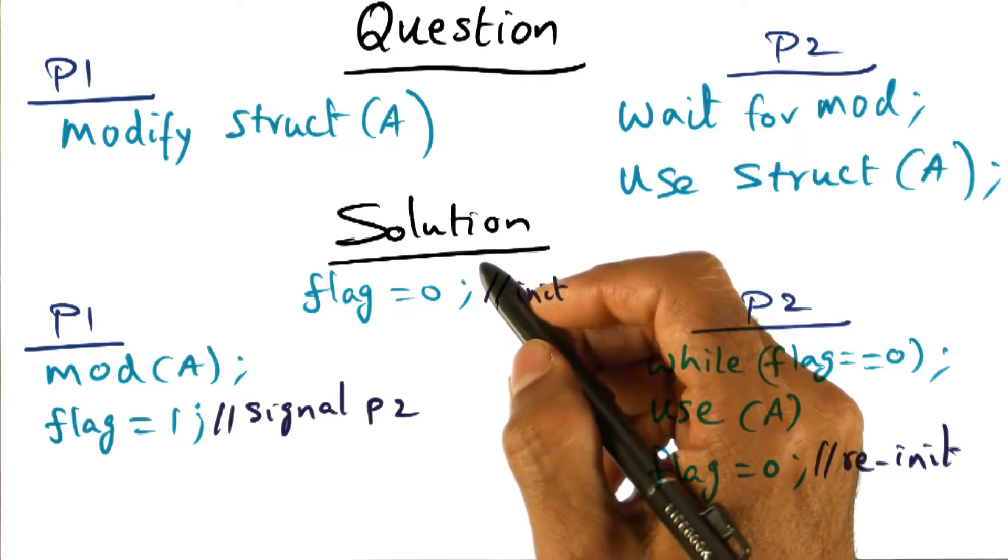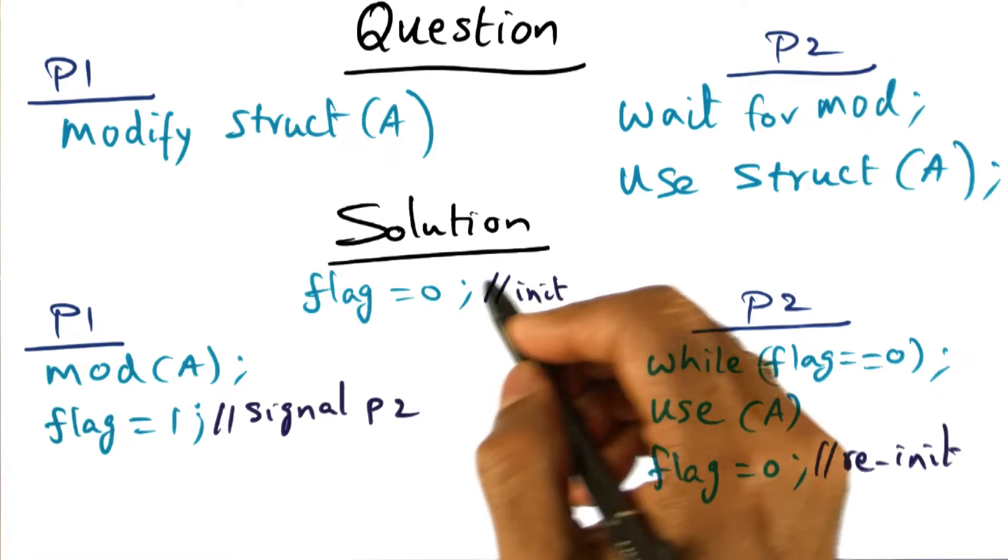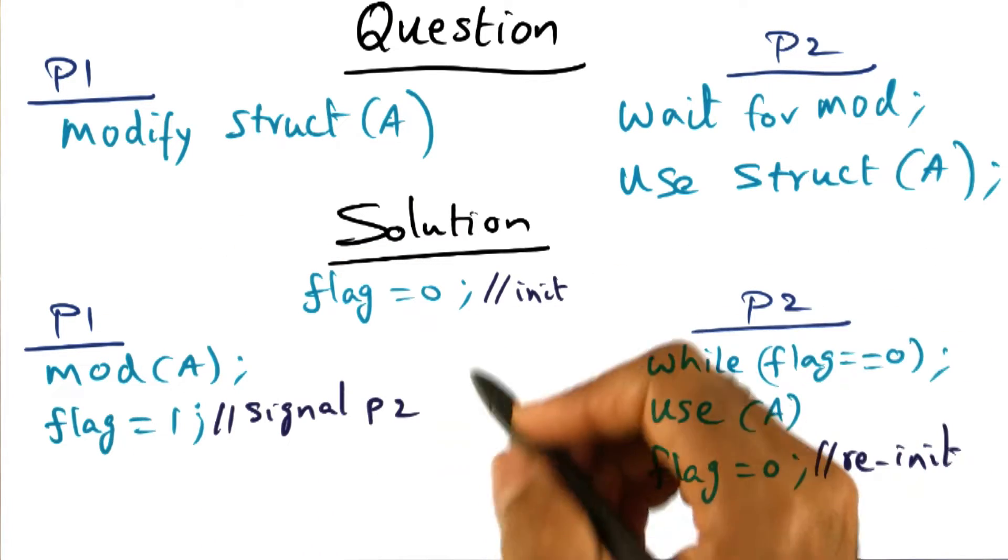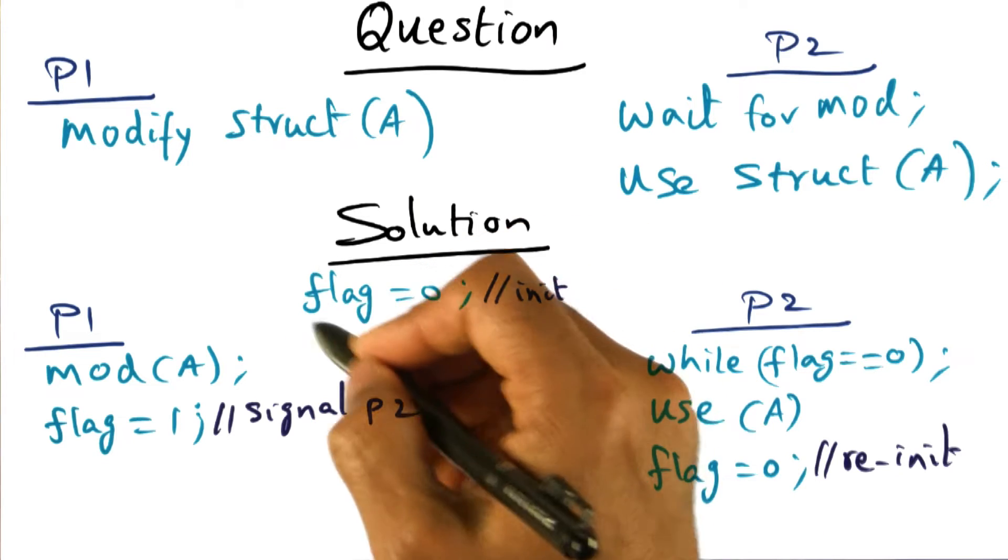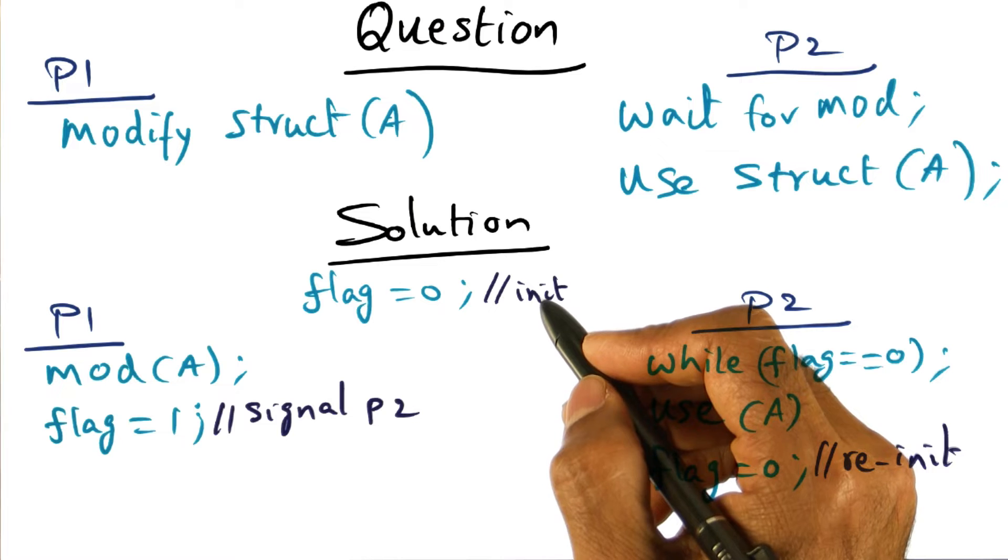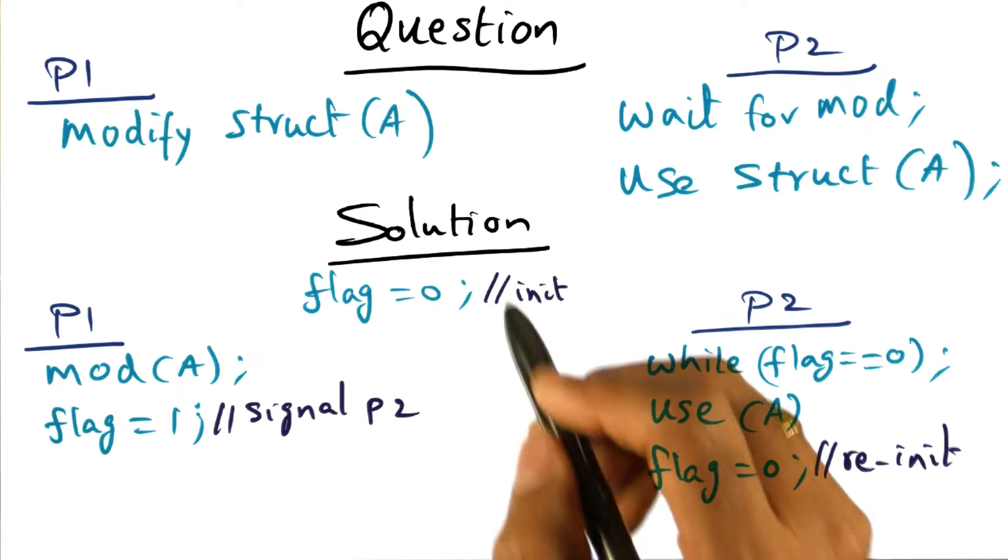The solution, it turns out, is surprisingly very simple. The idea is that between P1 and P2, I'm going to introduce a new variable, a shared variable. And that variable, I'll call it a flag. And I'll initialize this flag to be 0 to start with.